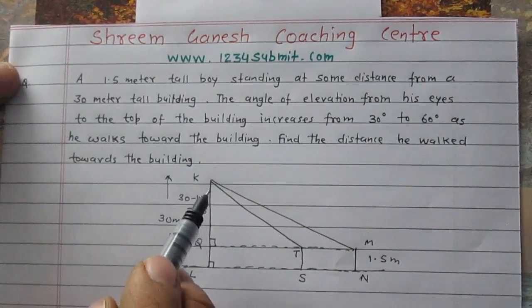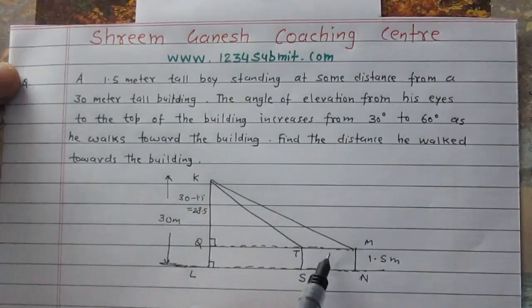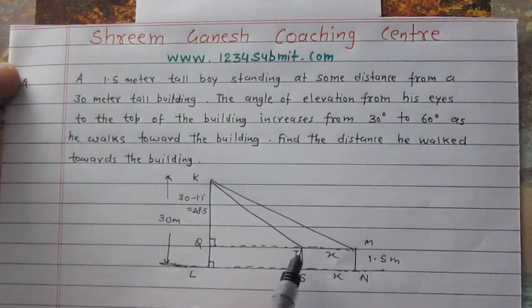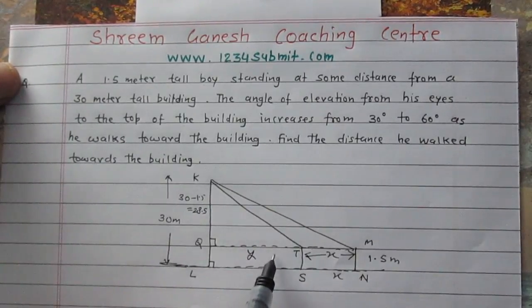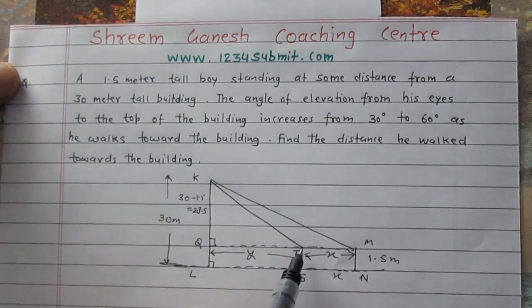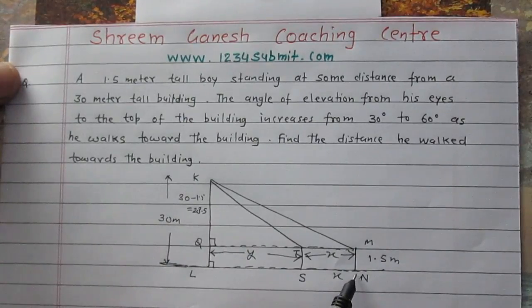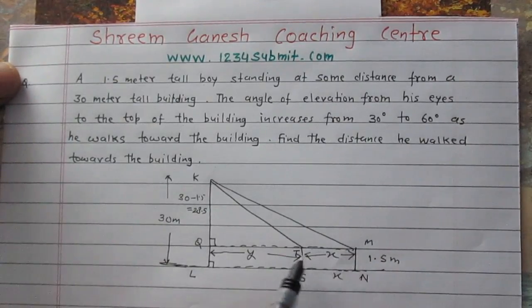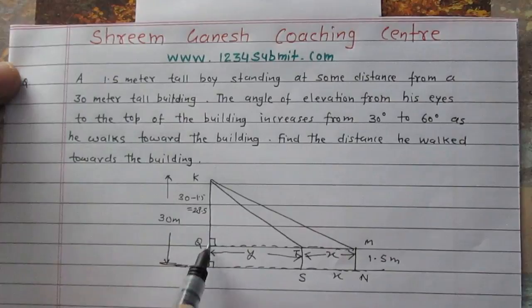So in these right angle triangles KQT and KQM, let us consider X which is MT or SN, both are equal. So SN or MT represents the distance he walked. And I am just assuming QT as Y. For simplification I have assumed QT, the length QT is Y. Now we are to find the distance traveled by the boy, the distance represented by SN. So we are to find the value of X here. And what is given to us? The height KQ which is 28.5.